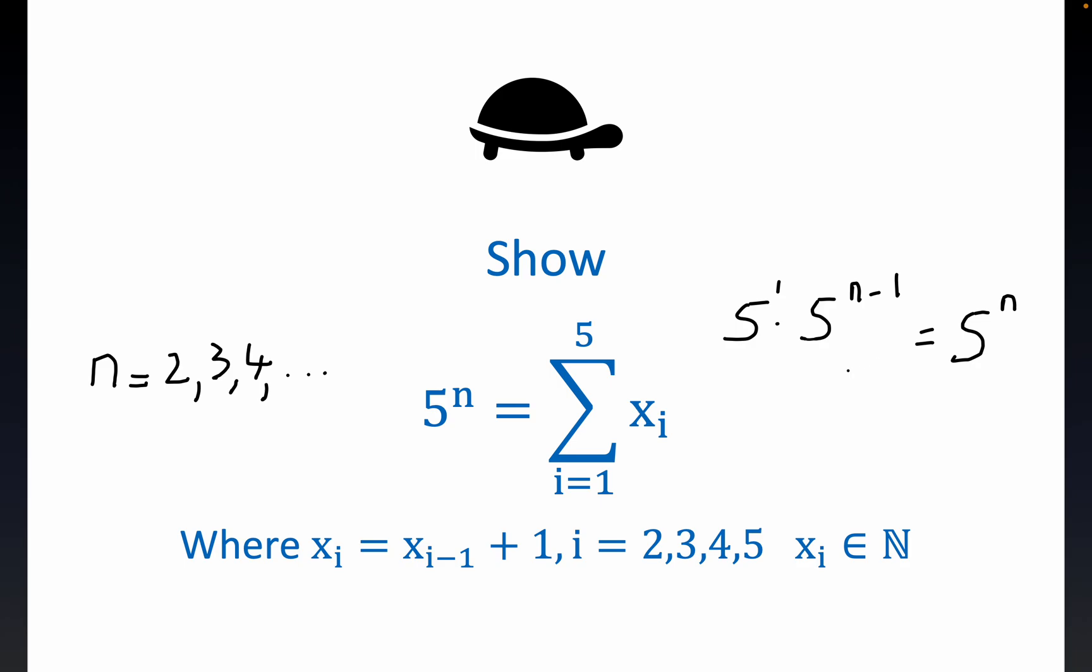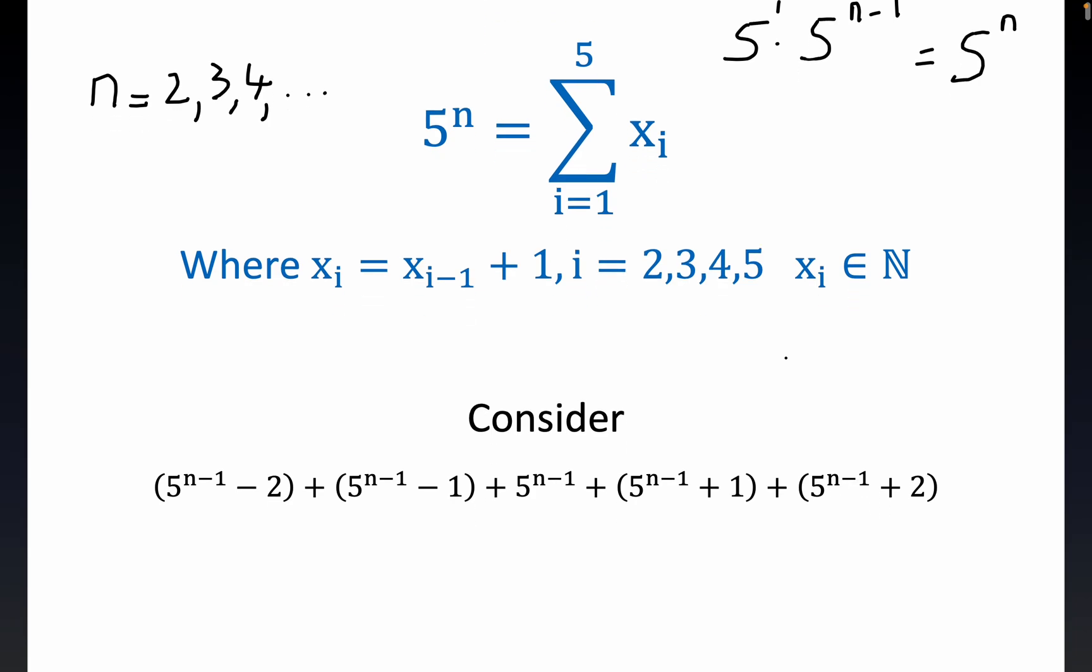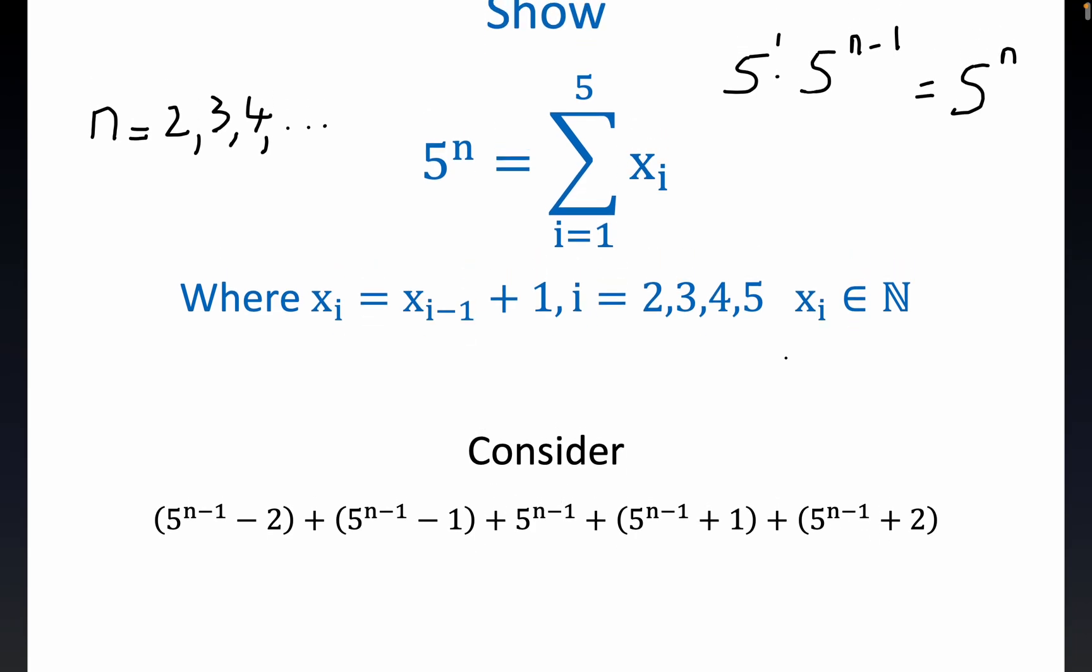this truth leads one to consider this sum. Notice here that we have 5 copies, 1, 2, 3, 4, 5 of them. Well, that's equal to 5 times 5 to the n minus 1, which is 5 to the n. So this definitely equals to, let me just write this out.